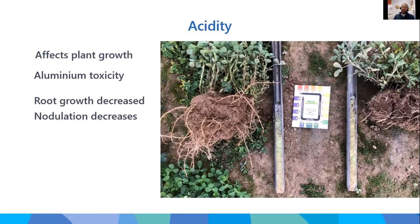The main thing aluminium toxicity does is stunt root growth, especially fine roots. On screen is a lucerne pasture — both from the same paddock. On the left, where lime was applied, there's a nice fibrous root system with nodules, so the legume is actually fixing nitrogen. On the right, an area that didn't receive lime, you can see a very stunted root system with thick stubby roots, no nodules at all, and some yellowing of leaves from manganese toxicity.